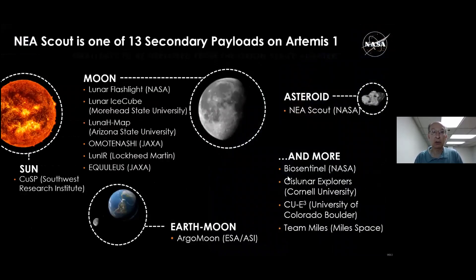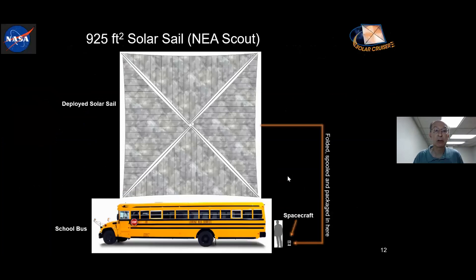NEA scout, near-Earth asteroid scout, is one of 13 small payloads that will fly this fall on the first launch of NASA's space launch system on the Artemis 1 mission. Most of those missions, small spacecraft, are going to the moon. Some are going to study other physics and science in the solar system, but we're the only one that's going to an asteroid. And that will be our target. It'll take about two and a half years to reach the asteroid that we will be visiting.